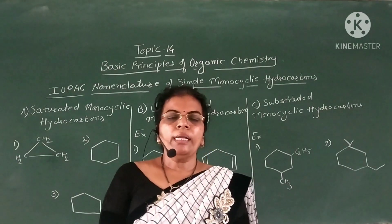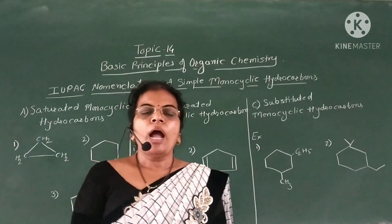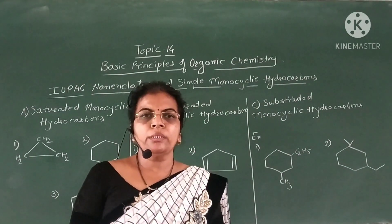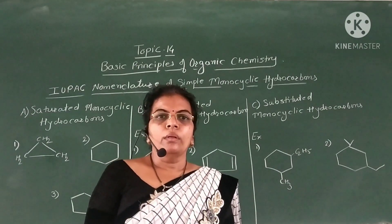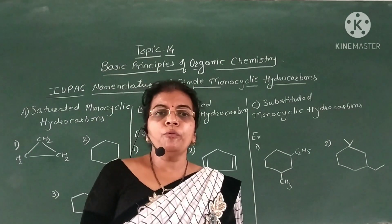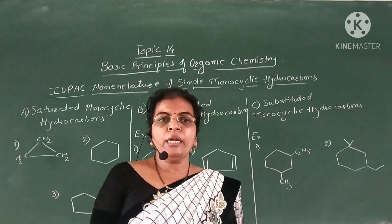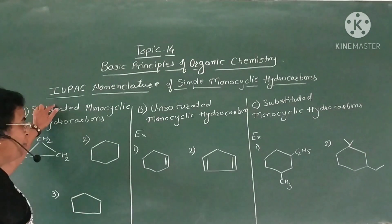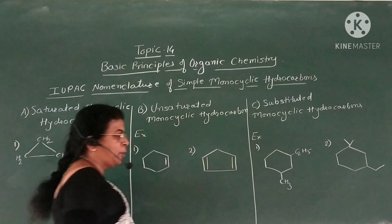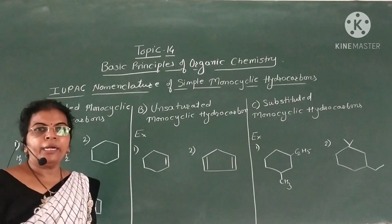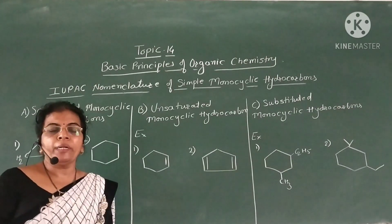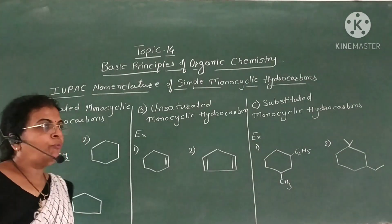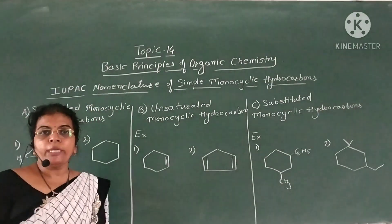Good morning students. Last time we started IUPAC nomenclature of organic compounds, in which we completed nomenclature of saturated hydrocarbons or aliphatic saturated hydrocarbons. Then we completed rules for IUPAC nomenclature of aliphatic unsaturated hydrocarbons, that is alkenes and alkynes. Now we are going to see the IUPAC nomenclature of simple monocyclic hydrocarbons.